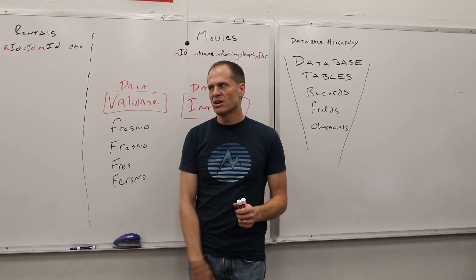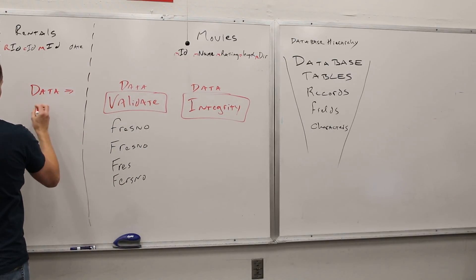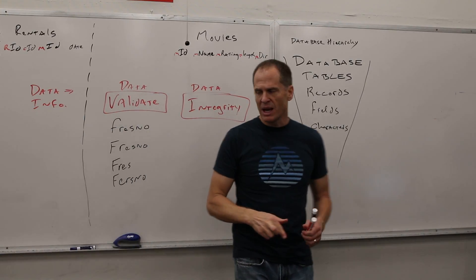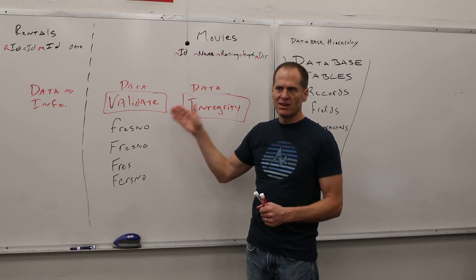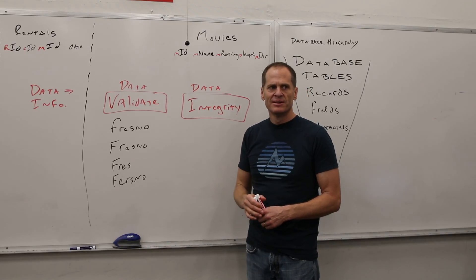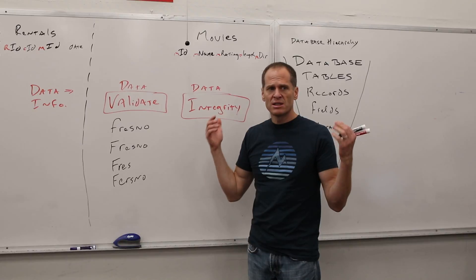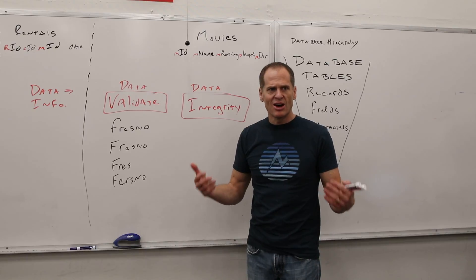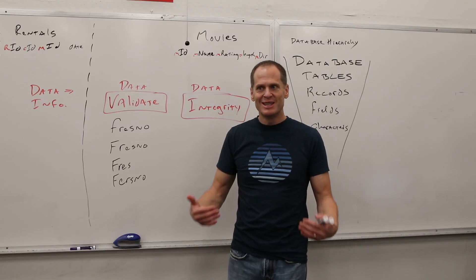Because you're taking data and turning it into information — the takeaway is we're learning about data, turning it into information. To have good information, you've got to validate your data, and that will give you data integrity. These are things people who work with databases think about. Otherwise, what's the point? There's no Moneyball if your data's off — you just hired the wrong people and your team still loses. You need good data.